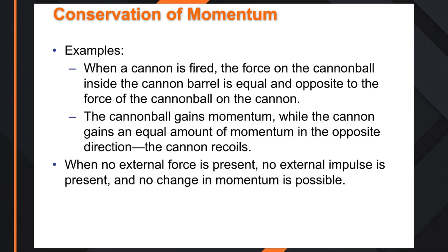When a cannon is fired, the force on the cannonball inside the cannon is equal and opposite. The cannonball gains momentum while the cannon gains an equal momentum in the opposite direction — that's the cannon's recoil. No external forces were present, no external impulses, and no change in total momentum.